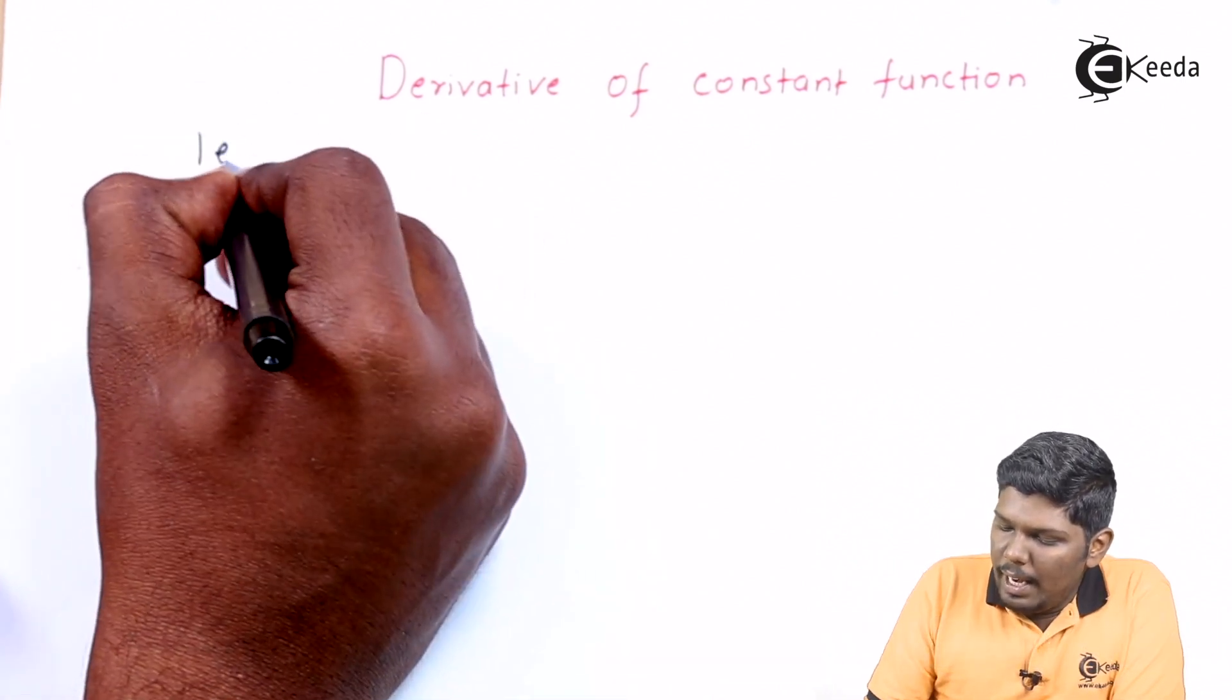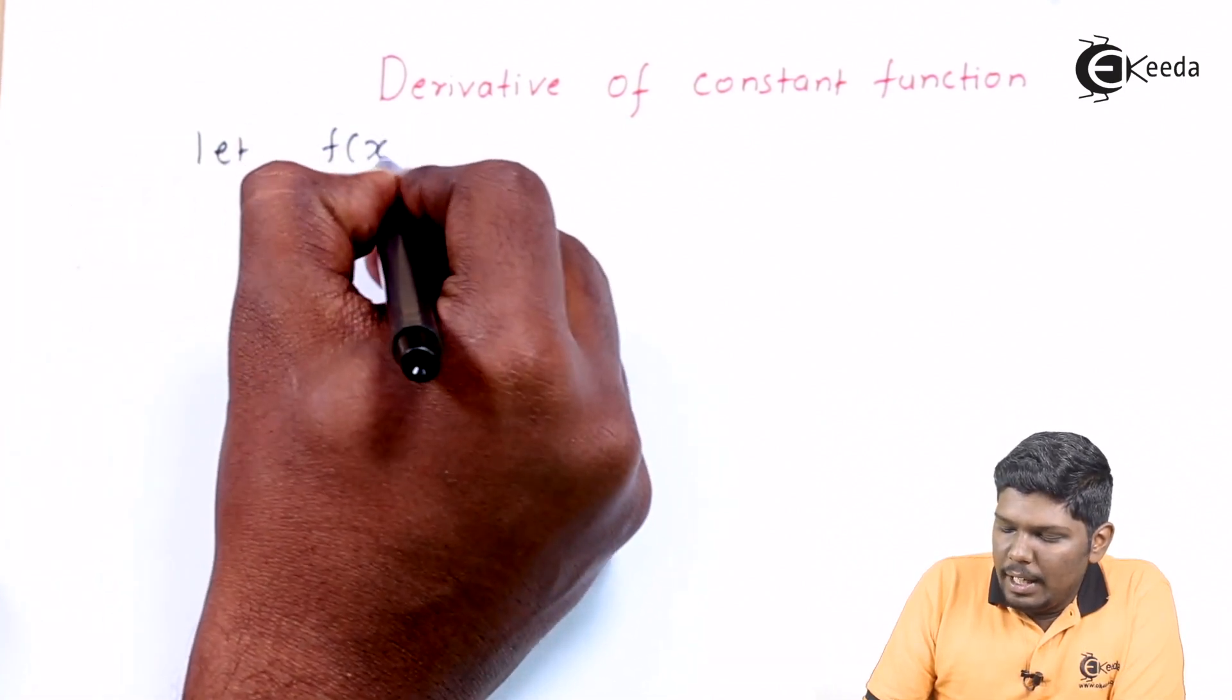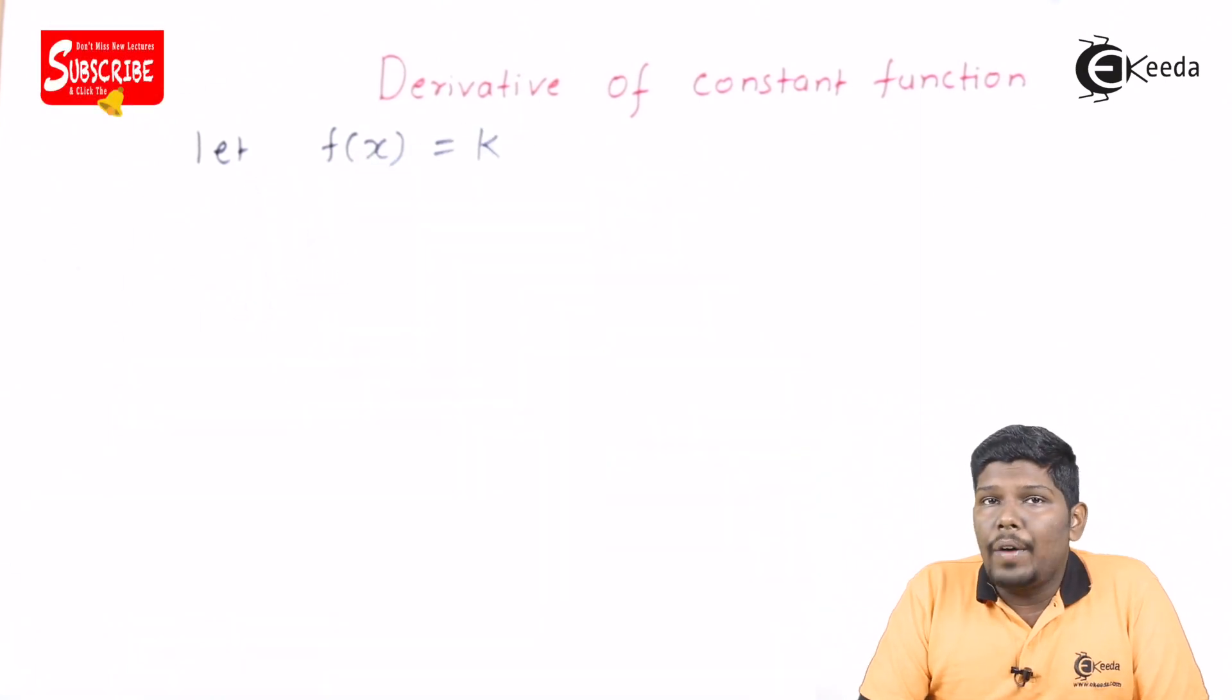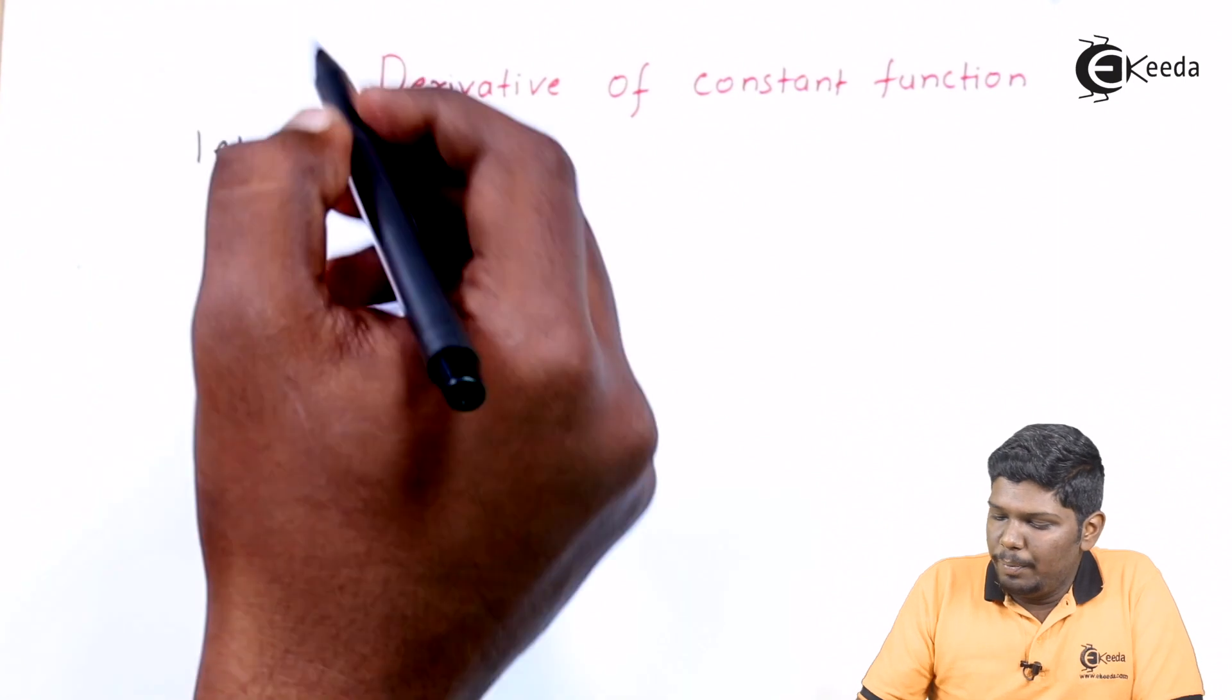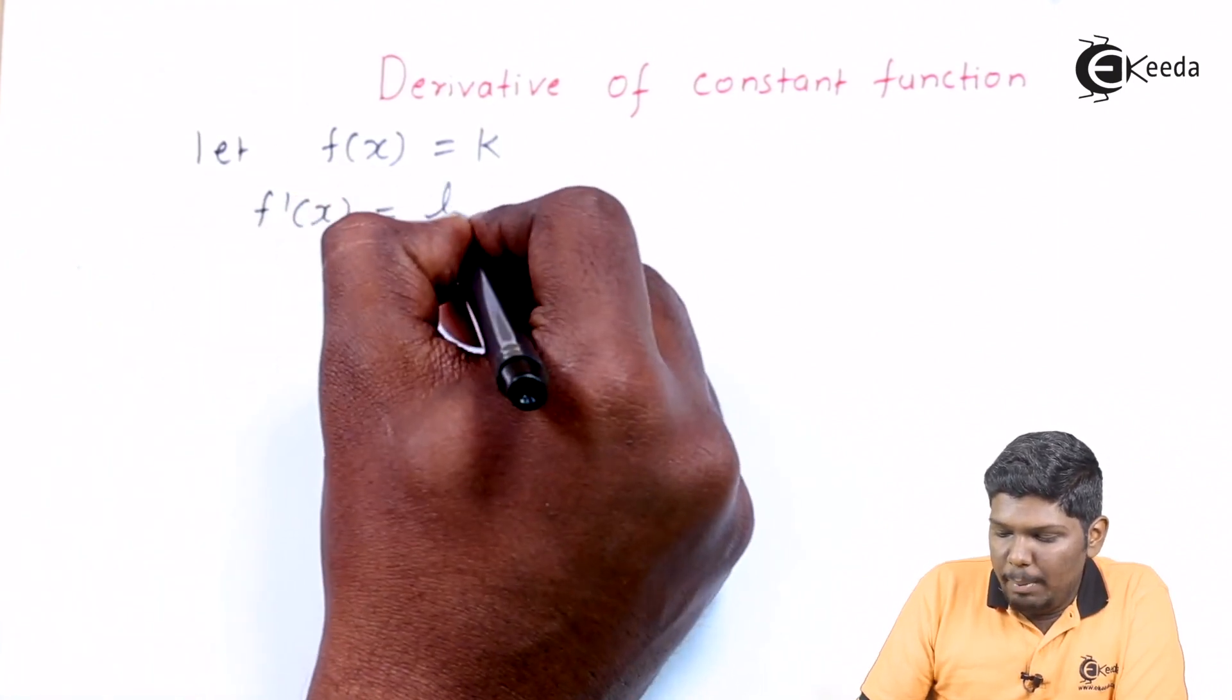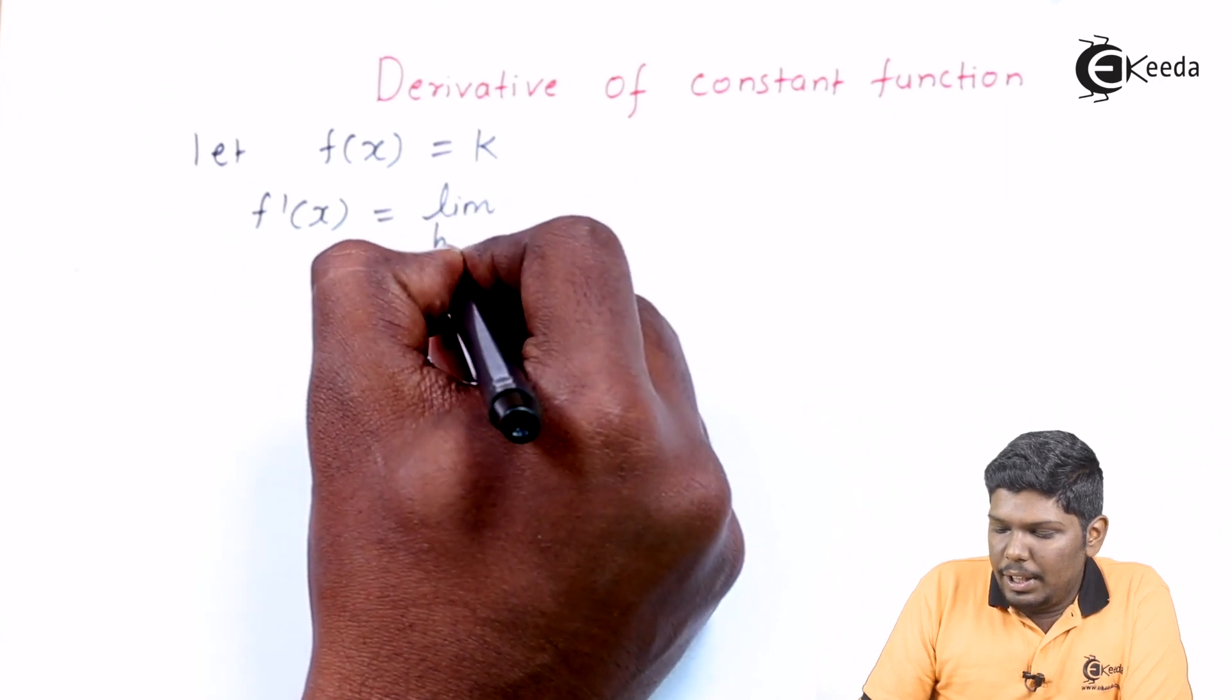We'll start with let f of x equals constant function k. Now to find the derivative using the first principle, we are going to use the formula: f dash x equals limit h tending to 0, f of x plus h minus f of x upon h.